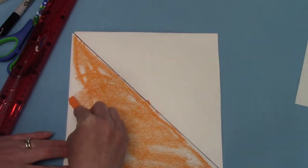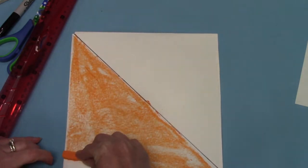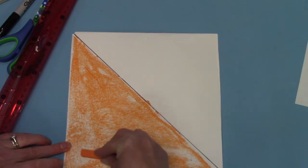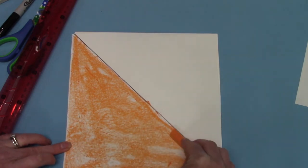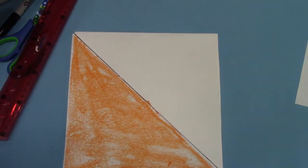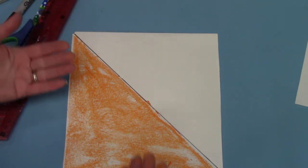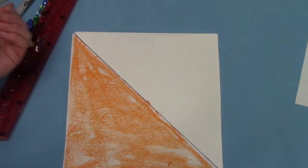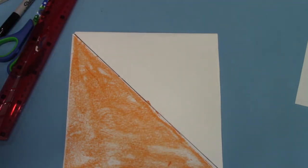I am coloring half, one out of the two pieces of the square. Look at that. Half of my square has been colored. Oh and my fingers a little bit too. Oh dear.